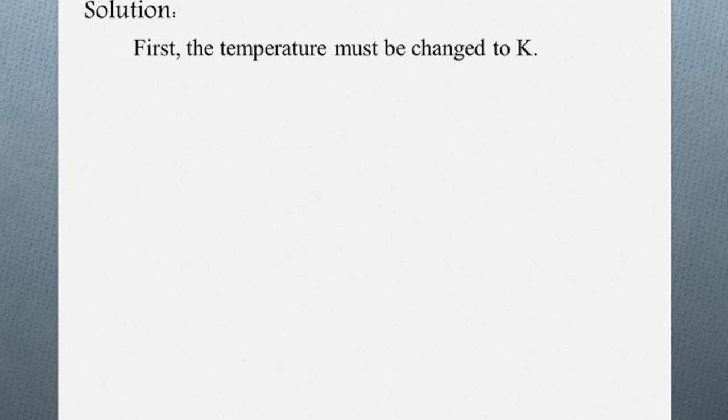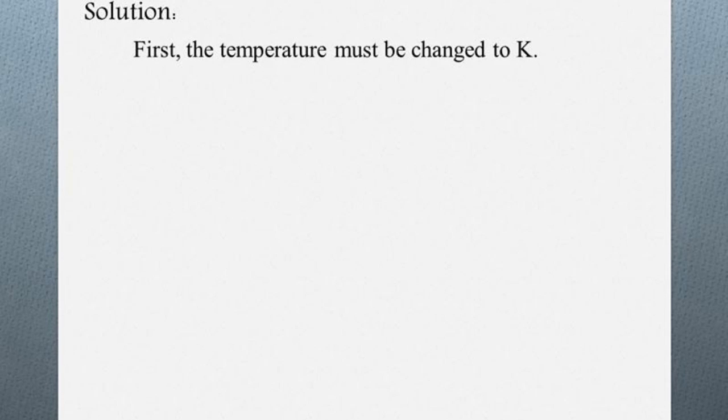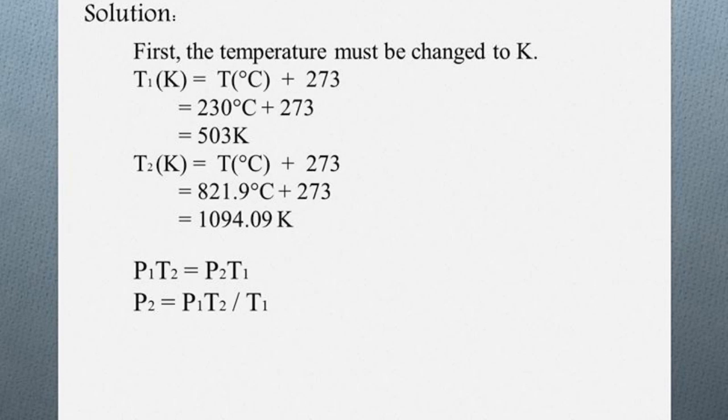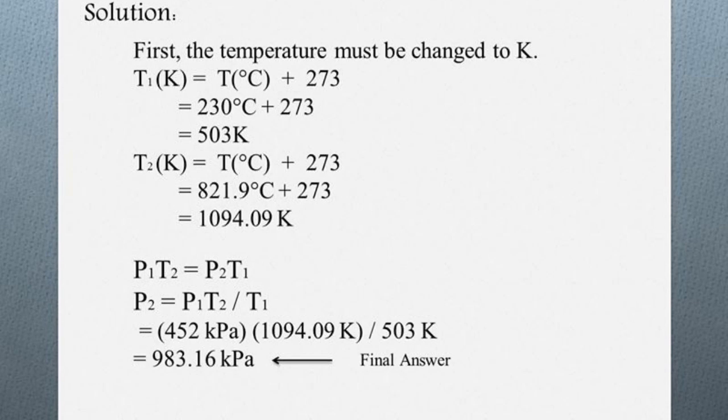First, the temperature must be in Kelvins. This is because Kelvin scale is an absolute scale, it does not go to negative. After you have converted your temperature in Kelvins, you need to rearrange the equation to find the final pressure. And finally, you just sub in the values to get your final answer.